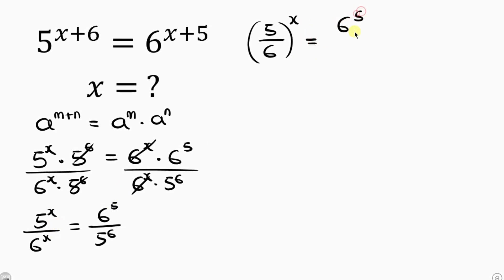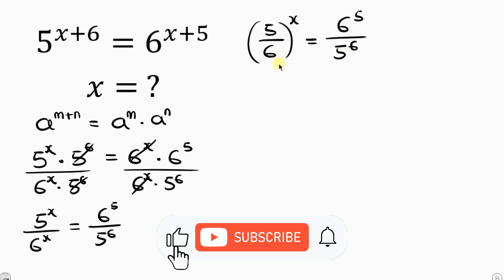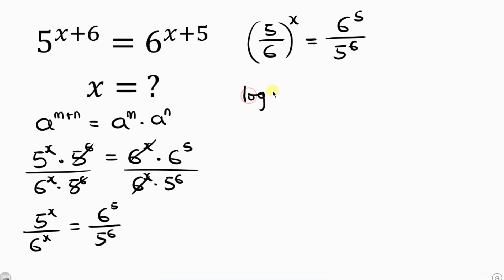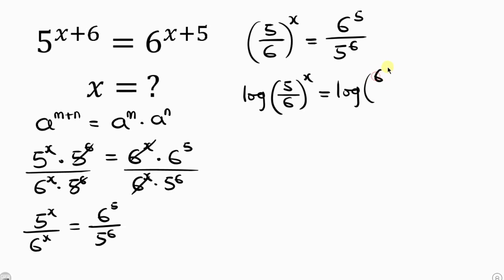Our next step is to take the log of both sides. So I'm taking the log of the left hand side, which is log of (5 over 6) to the power of x, equal to the log of the right hand side, which is log of 6 to the power of 5 divided by 5 to the power of 6.